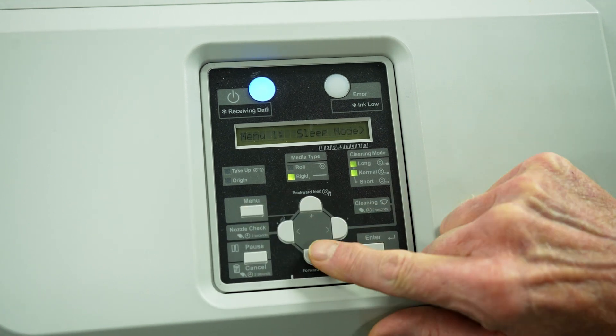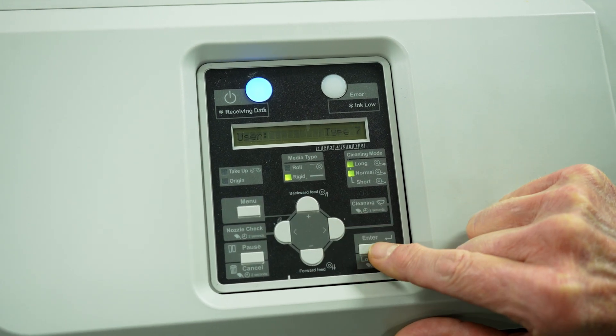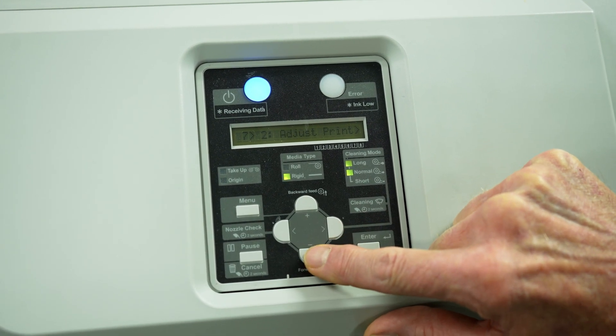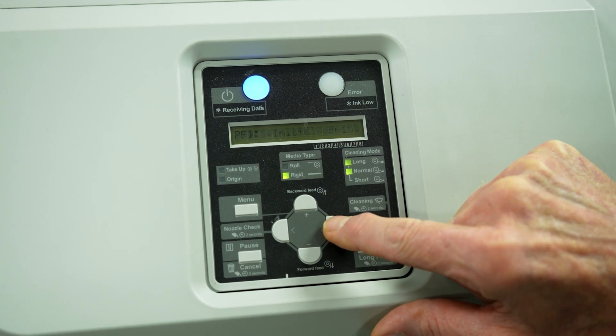Return to the same user type and select PF adjustment again. Go down to initial change and input your measurement.